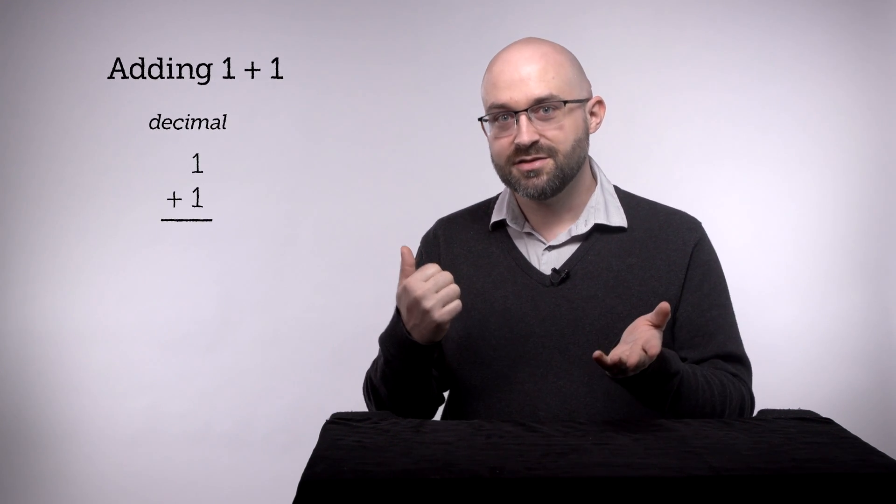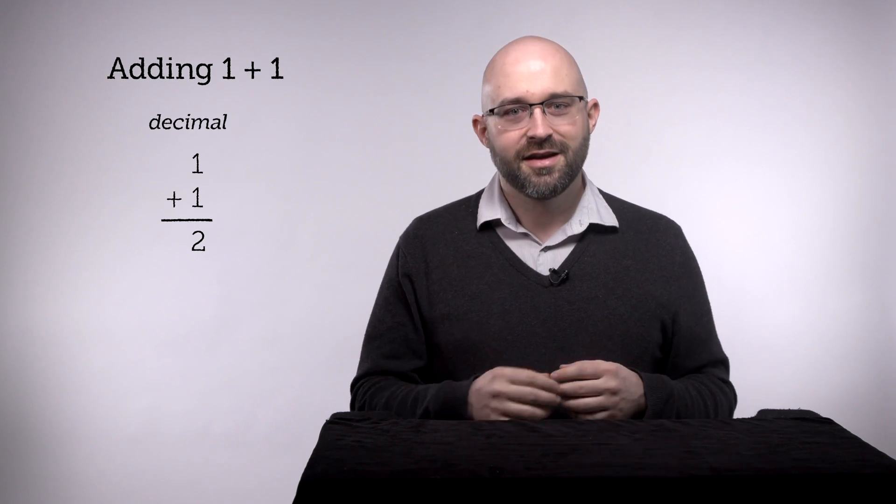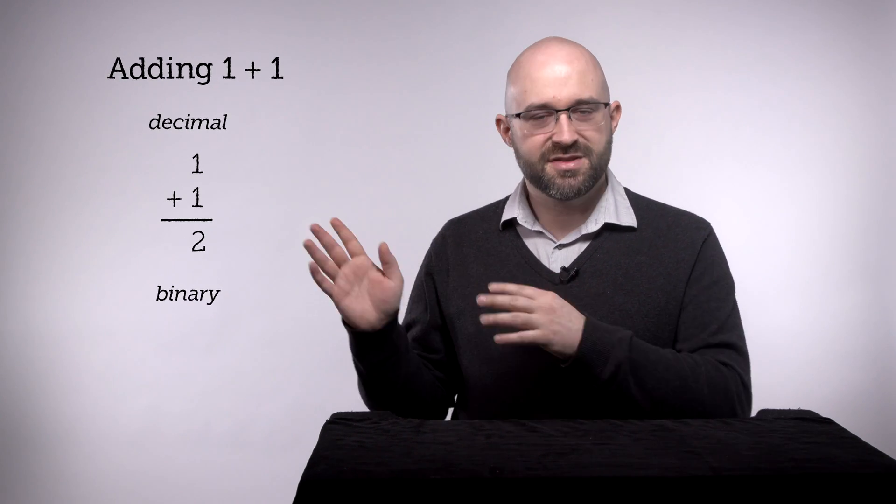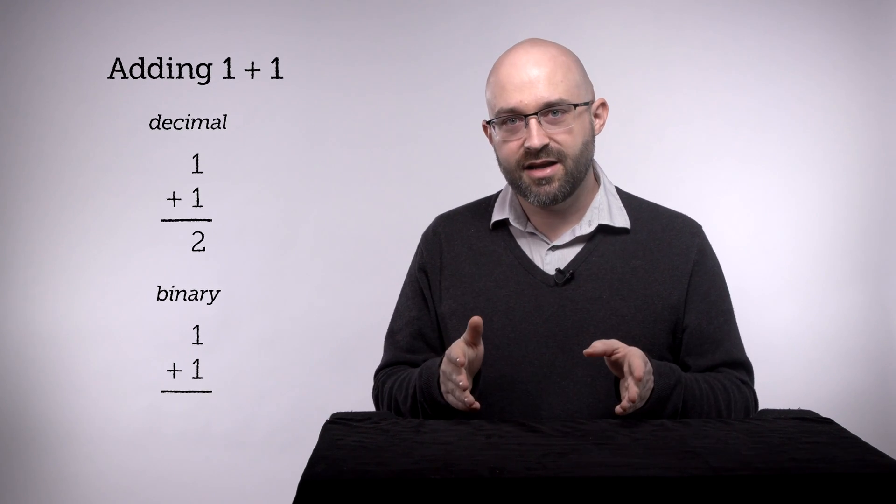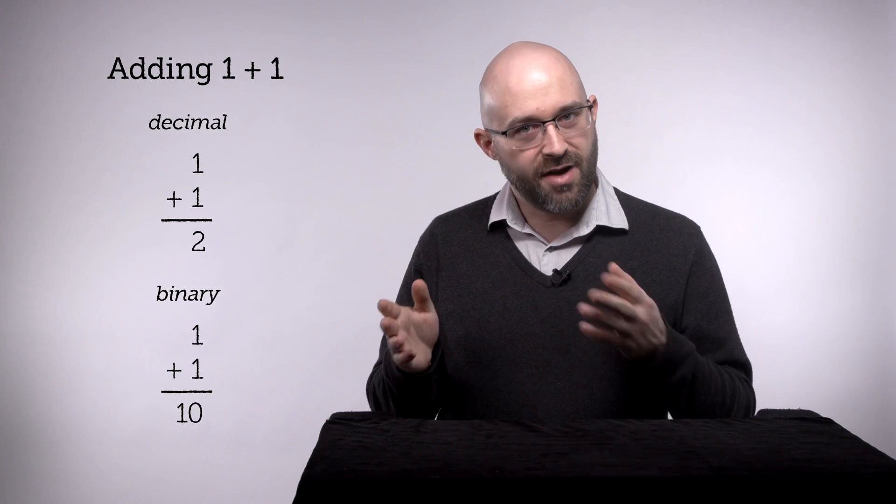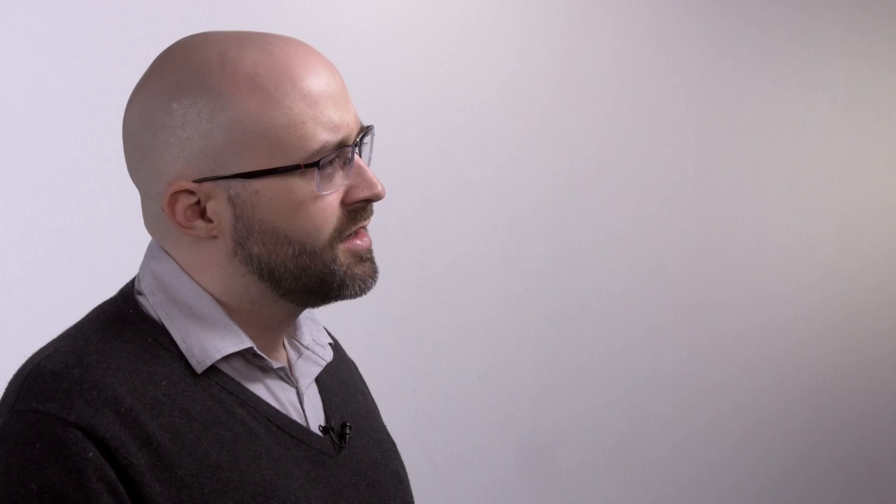So now that we know that, let's do some basic math. We'll come back to decimal for a minute. We're going to compute 1 plus 1. We do it just like we did in school: 1 plus 1 is 2. Very good. Now let's do it in binary. Same setup: 1 plus 1. And the answer is, in binary, 1-0, which is how binary says 2.